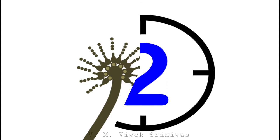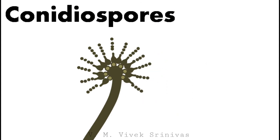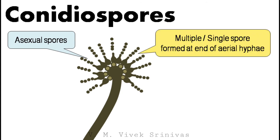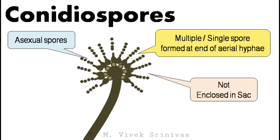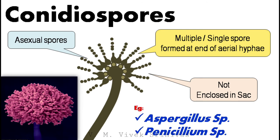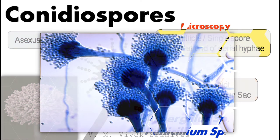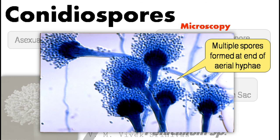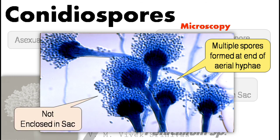Next, conidiospores. This is also an asexual spore. Here, multiple or single spores are formed at the end of aerial hyphae. Unlike the previous one, this is not enclosed in a sac, so they appear in a radiating fashion. Aspergillus and Penicillium are examples of fungi which produce this type of asexual spore. This microscopy image shows multiple spores formed at the end of aerial hyphae, not enclosed in a sac, appearing in radiating fashion.